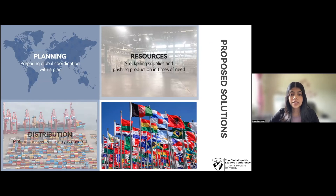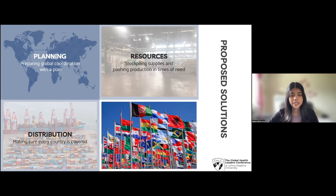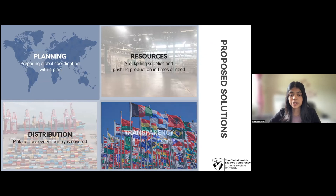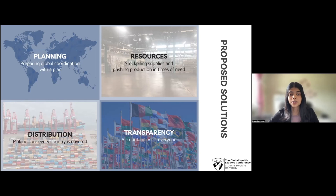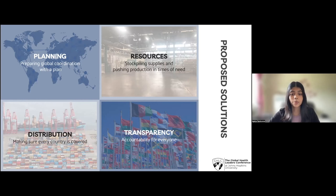Third, we need to limit resources that have been pre-purchased and pre-committed to countries that have more than enough to protect their populations. With the oversight of global health organizations, surplus countries should release their extra resources and give them to countries who don't have enough. Finally, we need greater transparency around existing resources and who they are committed to, so that we can have reallocation towards countries that need more. This provides accountability for everyone. With these ideas in mind, we can put better global infrastructure in place so we're better prepared to fight future emergencies as a global community.